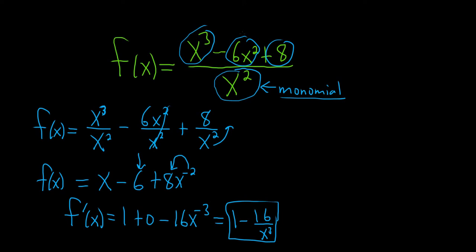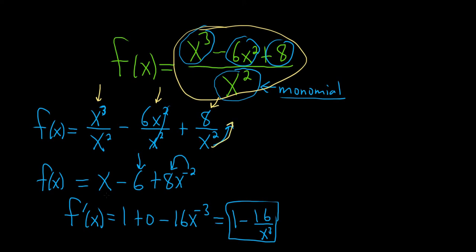So initially we're looking for the derivative, and we have a fraction, so automatically you might think quotient rule. However, because it's a single term on the bottom, it's just easier if you break it up. So you just do the first one, x cubed over x squared, minus the second one over x squared, plus the third one over x squared. Simplify, maybe bring this up, and then just take the derivative of each piece, and it works out super, super nice.